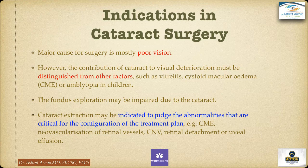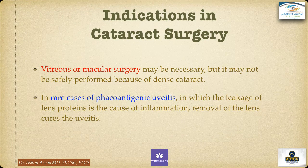Cataract extraction may be indicated to assess abnormalities critical for configuring the treatment plan — for example, cystoid macular edema, new vascularization of retinal vessels, formation of choroidal vascular membranes, or in cases of traction or total retinal detachment or uveal effusions. Additionally, vitreous or macular surgery may be necessary but cannot be safely performed because of a dense cataract. In rare cases of phacoantigenic uveitis, where lens protein leakage causes inflammation, removal of the lens cures the uveitis.